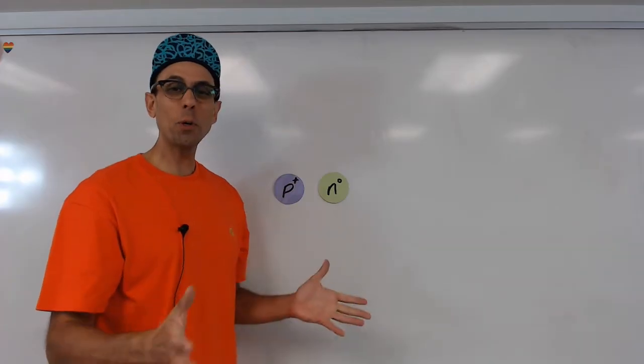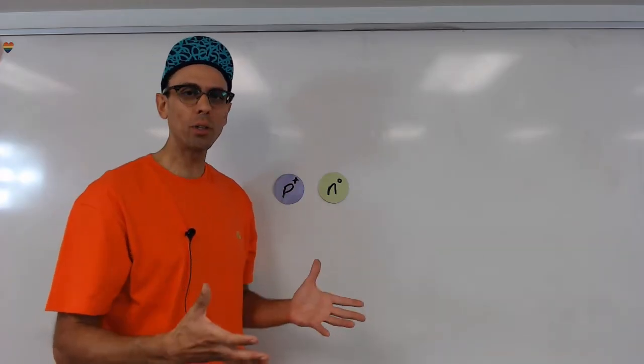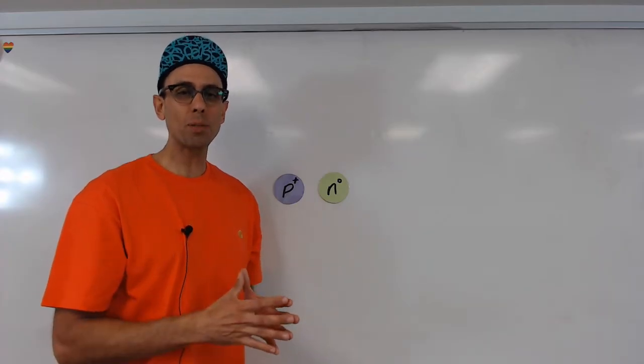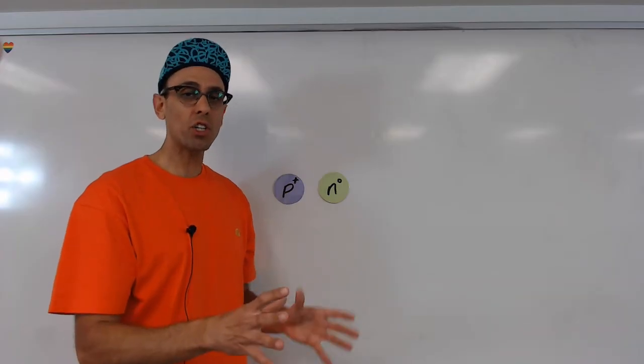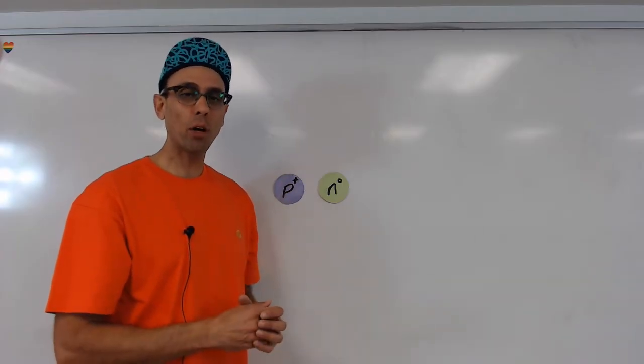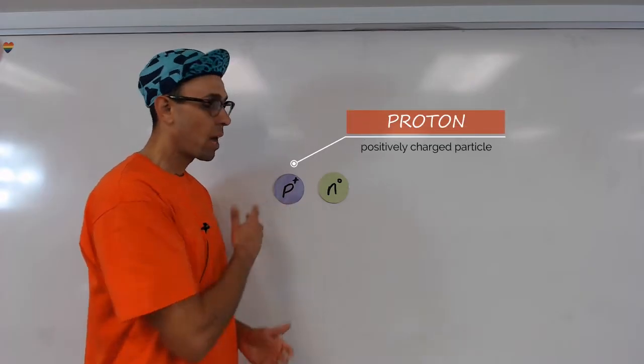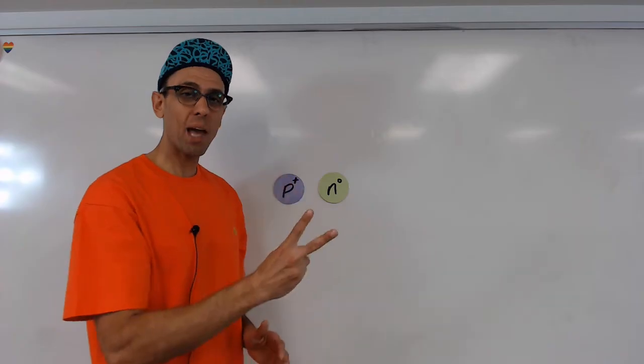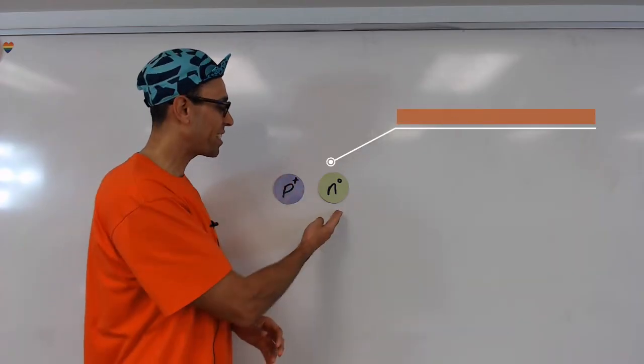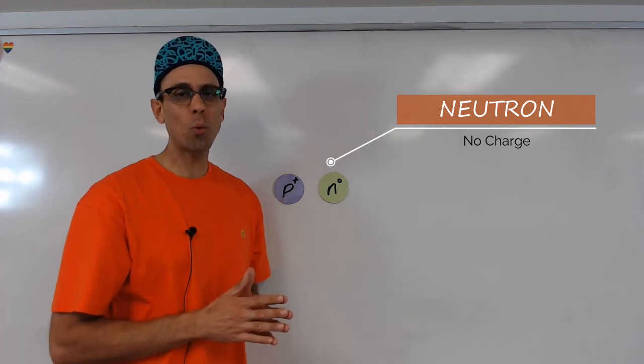If we're going to arrive at an understanding of what makes a nucleus more or less stable, we have to have some grasp on what a nucleus actually is. It turns out that a nucleus is a collection of two different types of particles. The first of those is known as the proton. Protons have a positive charge. The second type of particle found in the nucleus is the neutron, and neutrons have no electrical charge whatsoever.